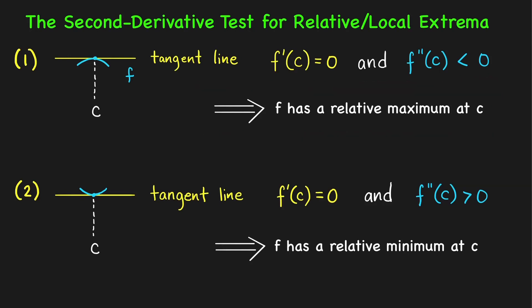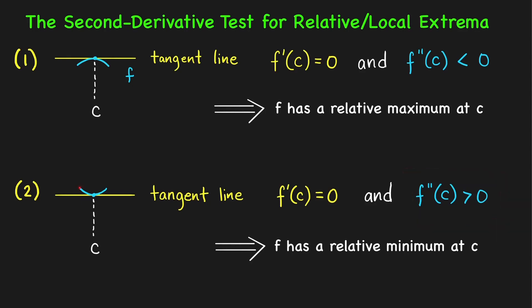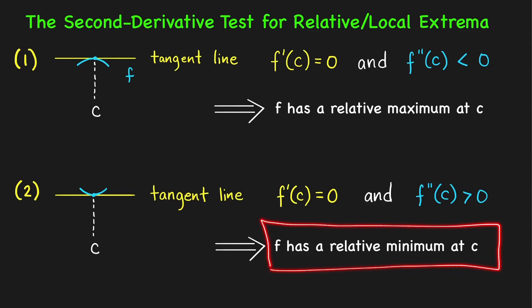Second case: again, we have a horizontal tangent line at x equals c. The second condition is that the second derivative at c is positive. In terms of concavity, it means the graph is concave up at that point. Therefore, we have a graph that is concave up at x equals c, and clearly we have a relative minimum at c. So our conclusion is that the function has a relative or local minimum at x equals c.